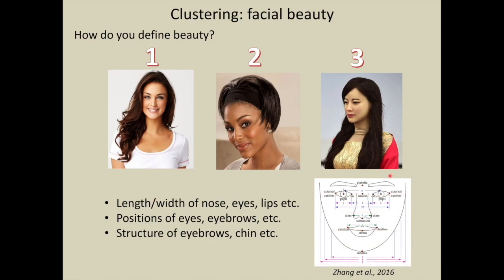But hang on, number three is not a human, she is a robot. Leaving the humor, basically measures can be established to identify beauty, such as length or width of nose, eyes, lips, and so on, positions of eyes or eyebrows, structure of eyebrows and chin, and so on. So you can develop clustering algorithm for facial beauty.